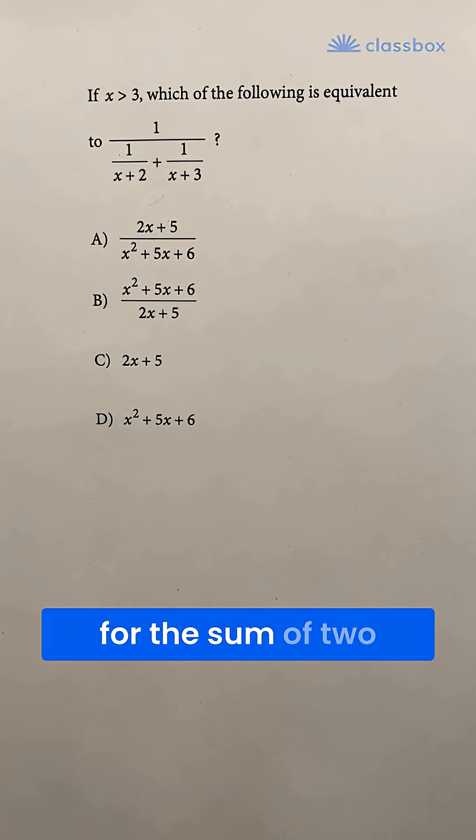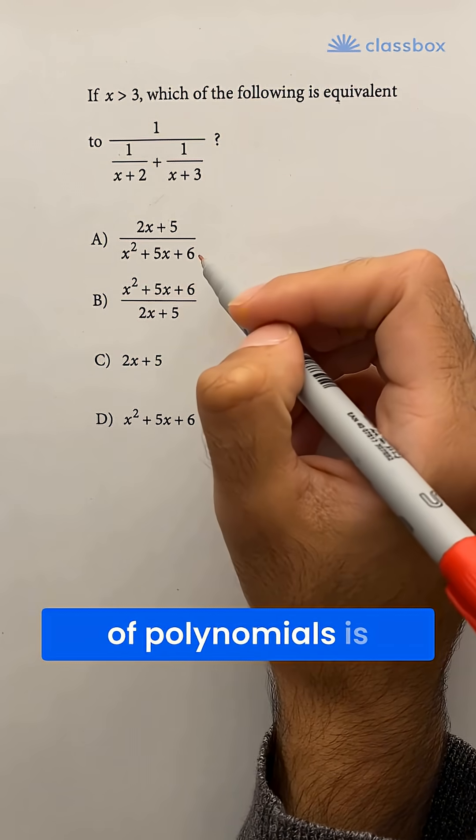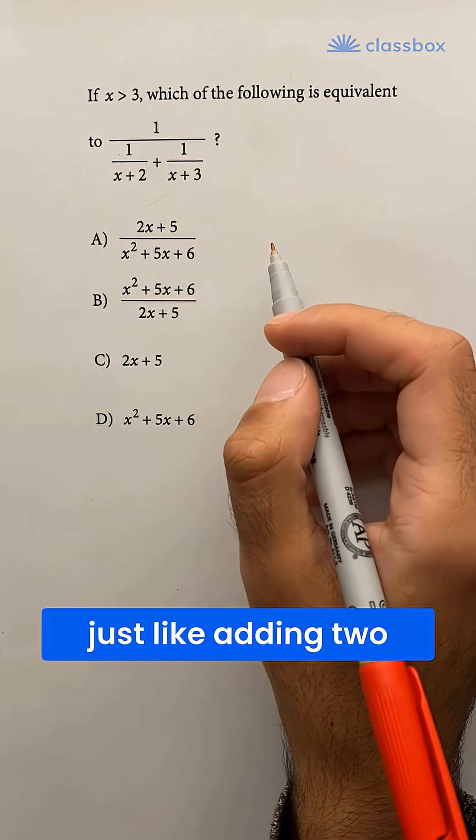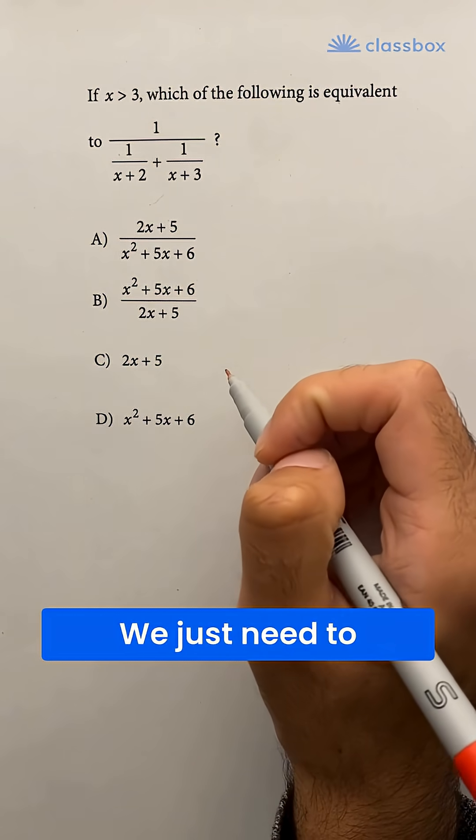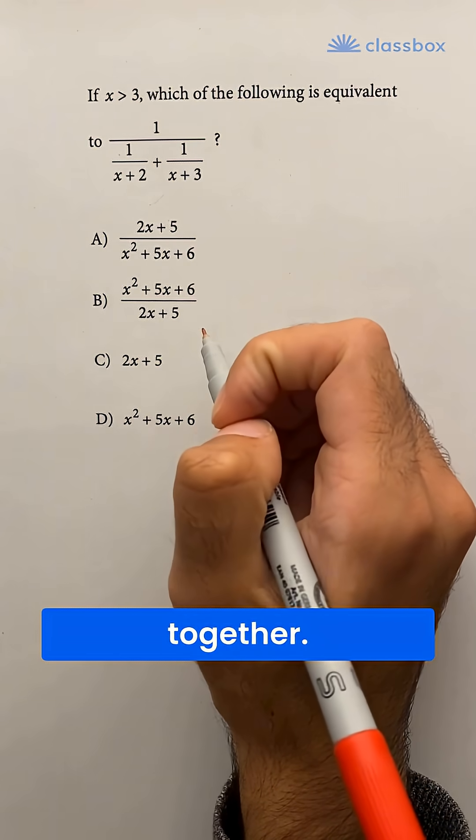If you see an expression asking for the sum of two fractions that have polynomials in the denominator, don't panic because adding two fractions of polynomials is just like adding two regular fractions. We just need to make sure that the denominators of the two expressions are equal and then we can add them together.